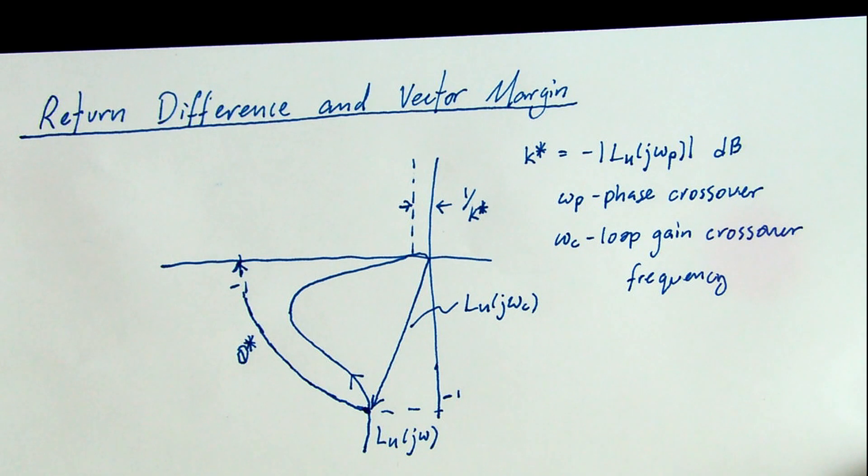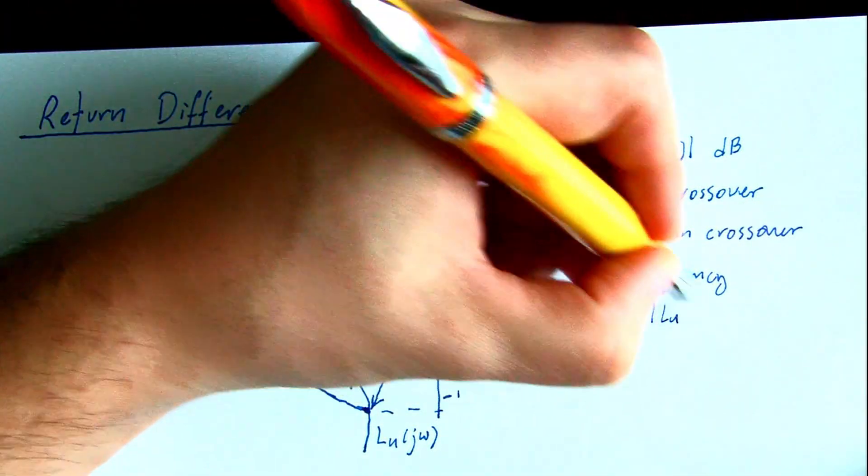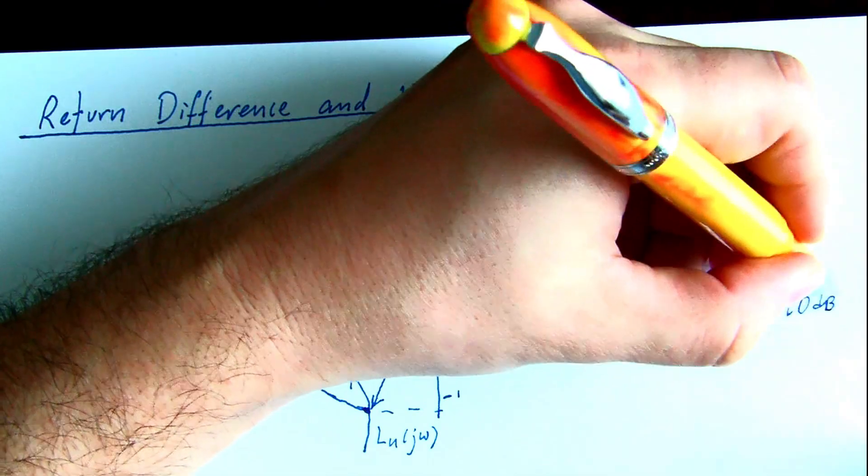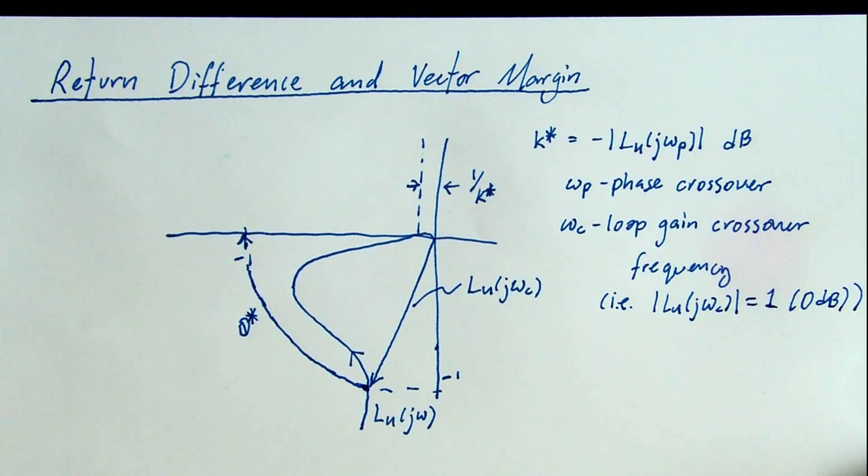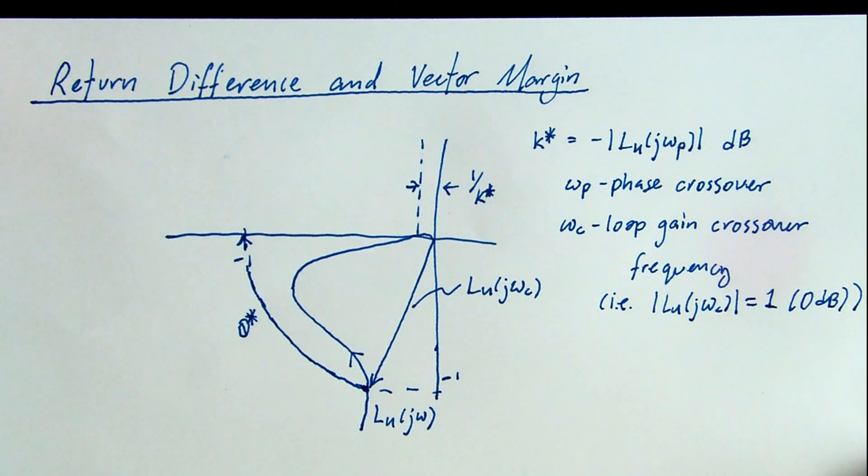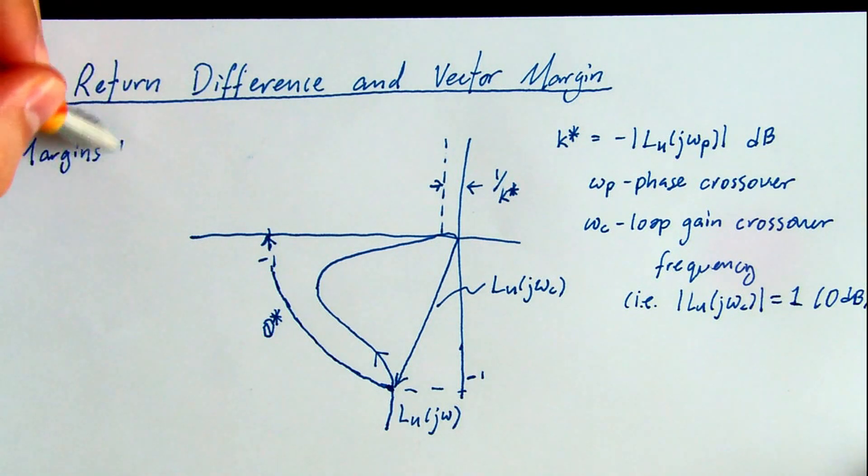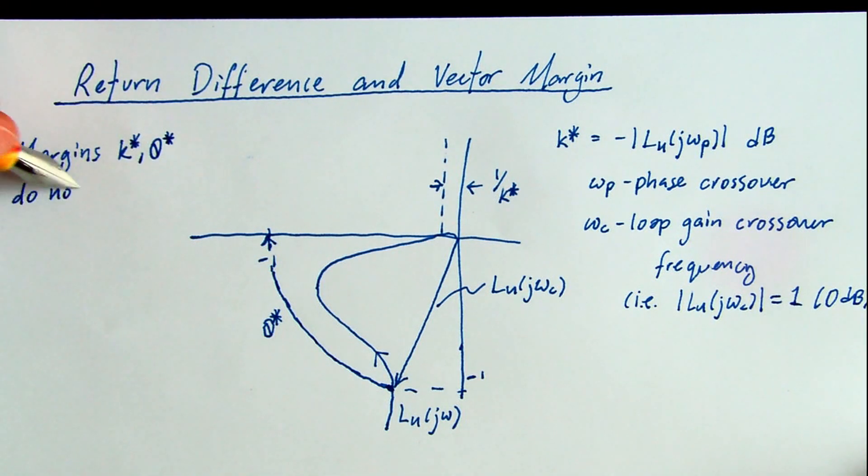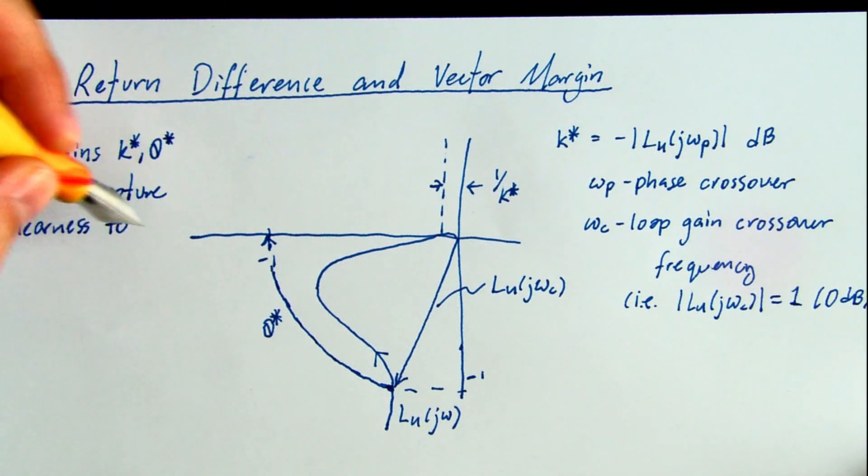Gain and phase margins are only evaluated at two particular frequencies. There's an intermediate frequency between the loop gain crossover and the phase crossover where the loop gain comes very close to the critical point. So stability margins don't always capture nearness to the critical point.